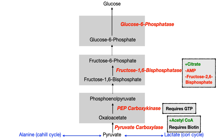The big-picture regulator of gluconeogenesis is glucagon. Glycolysis happens in response to insulin — insulin promotes breakdown of glucose downward from glucose to pyruvate — and the opposite is true of glucagon. Glucagon inhibits glycolysis and promotes gluconeogenesis. A key USMLE and COMLEX simplification: if you have insulin, you don't have glucagon, and vice versa. If you know an enzyme is regulated by one of those hormones, think of them as opposites.